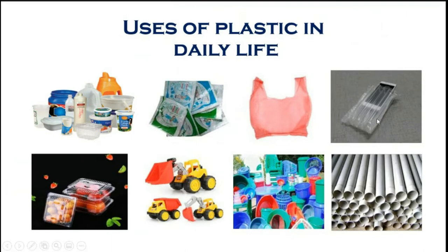Electronic equipment like printers and mobile phones are wrapped in bubble cases. Food items, toys, day-to-day items like tubs, jars, mugs, and glasses, as well as pipes, fittings, and lumber pipes — all use plastic. Each item uses a different kind of plastic from the seven types discussed, depending on what needs to be manufactured.